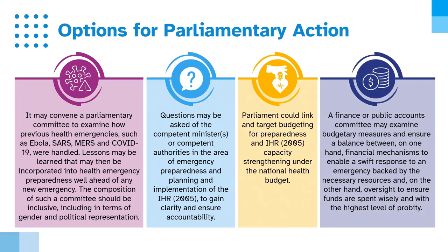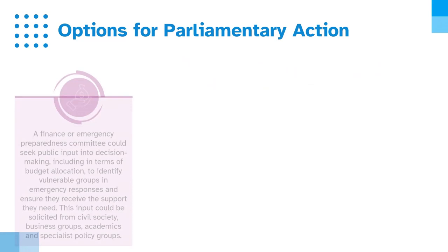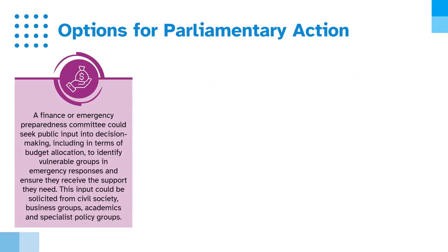A finance or public accounts committee may examine budgetary measures and ensure a balance between, on the one hand, financial mechanisms to enable a swift response to an emergency backed by the necessary resources, and on the other hand, oversight to ensure funds are spent wisely and with the highest level of probity. A finance or emergency preparedness committee could also seek public input into decision making, including for budget allocation, to identify vulnerable groups in emergency responses. This input could be solicited from civil society, business groups, academics, and specialist policy groups.